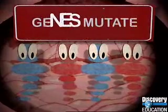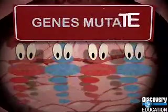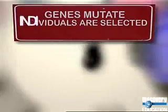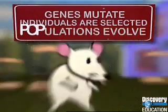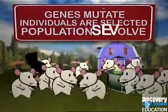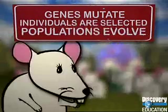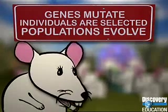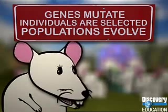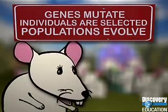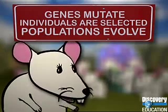Genes mutate. Individuals are selected. Populations evolve. And you'll probably never be able to cross a mouse with a mango.